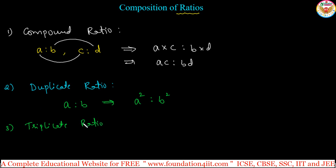triplicate ratio. Same method you apply it. A is to B is the ratio, right? Three times, that means A power 3 is to B to the power 3. This is triplicate ratio. Even you can take some examples for this duplicate ratio,